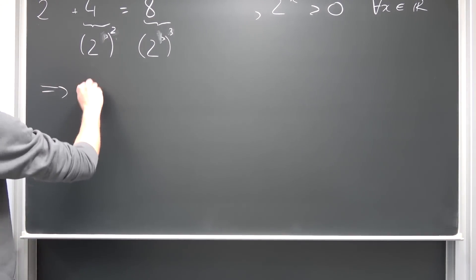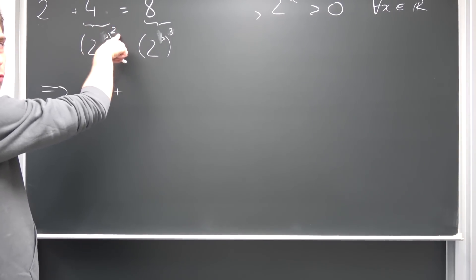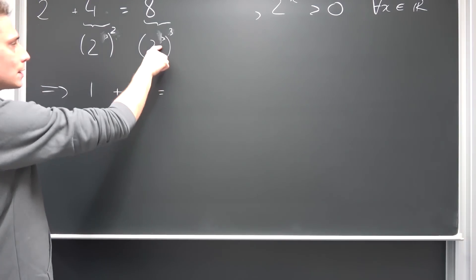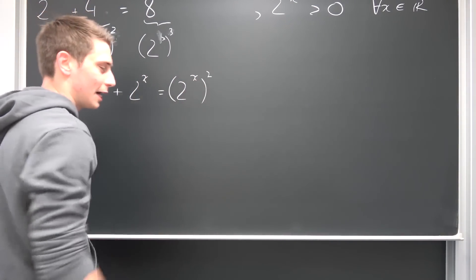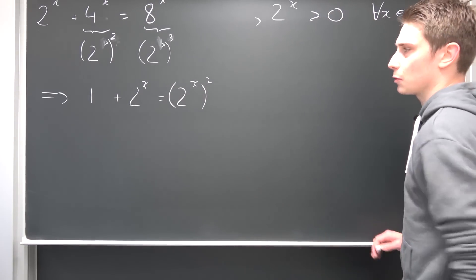Resulting in, this is going to give us 1 plus, 2 to the x power is going to cancel out on one here. So 2 to the x power is equal to 2 to the x power squared. I hope you can see where all of this came from. It's just pretty easy arithmetic that we are doing here.